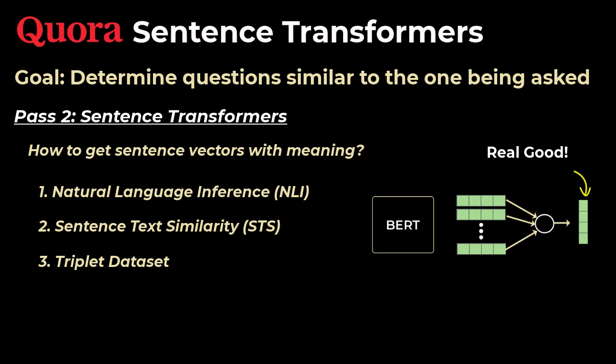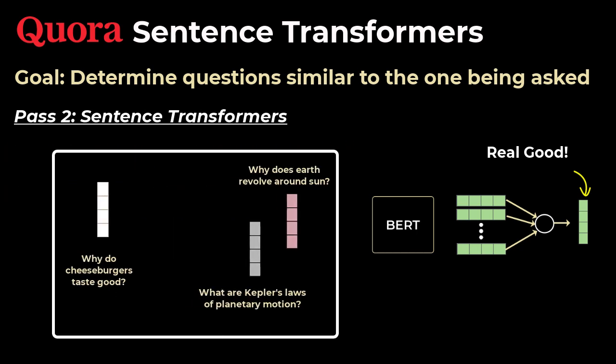That is, it encodes the meaning of the sentence very well. This is important since it means that closer the vectors are in terms of distance, the more similar is the meaning. And so the question, why does the earth revolve around the sun, would have a higher similarity score with the question, what are Kepler's laws of planetary motion, than it would with the question, why do cheeseburgers taste good, since the first pair is just closer in meaning.